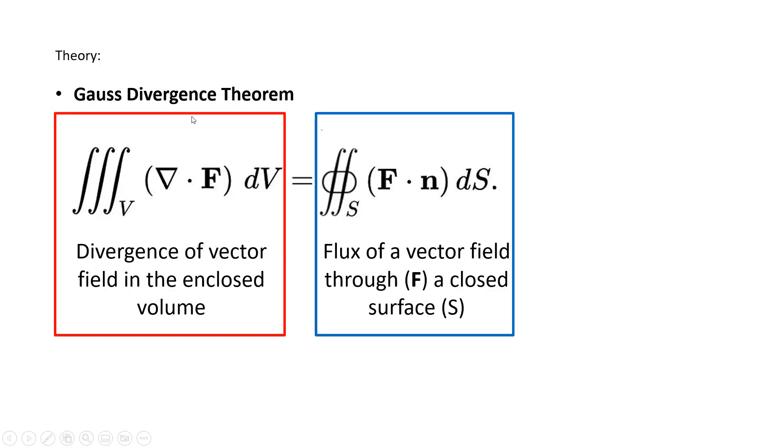Now we can use the Gauss Divergence Theorem to solve this question. The Gauss Divergence Theorem simply relates the surface integral over a closed surface to the volume integral around the enclosed volume, given by the divergence of this vector field.